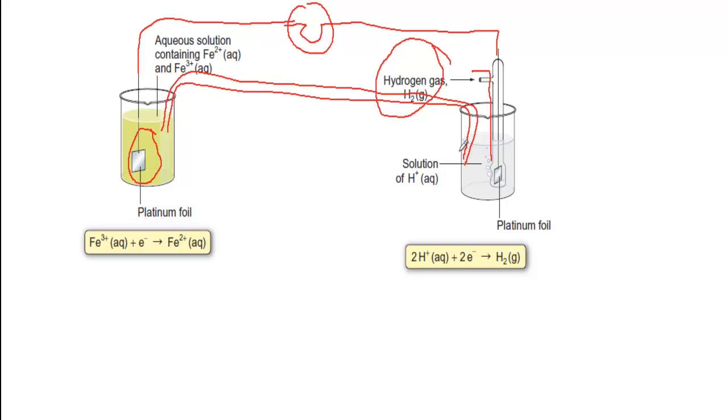So there we have a cell set up of two electrodes, neither of which consist of a metal in contact with its ions, and we can do this wherever we have a more oxidized and a more reduced form in solution.